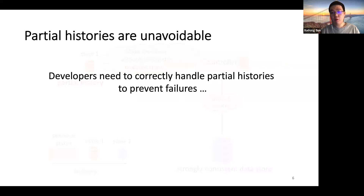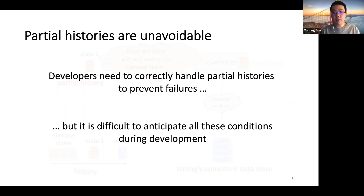Developers need to correctly handle partial history to prevent failures. But it is difficult to anticipate all these conditions during development. As a result, bugs caused by partial history still occur with severe consequences.